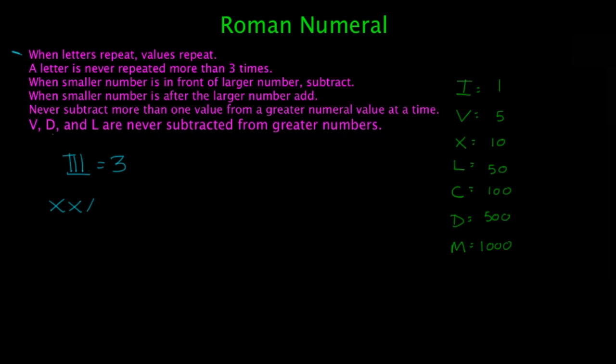Or X, X, X, that's going to equal 30. On the right, I showed what each letter value is. So I is 1, V is 5, X is 10, L is 50, C is 100, D is 500, and M is 1,000.